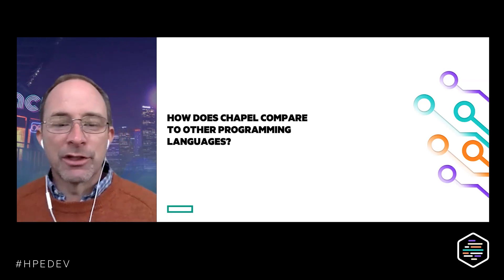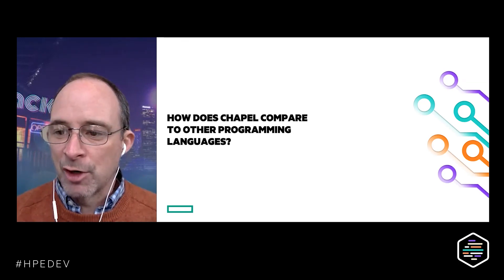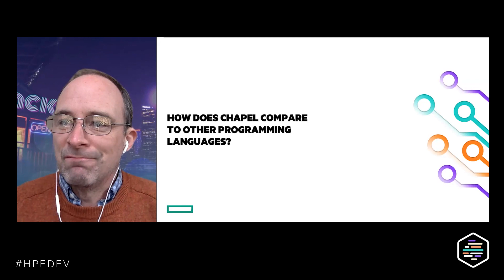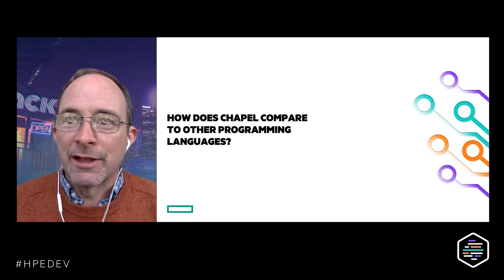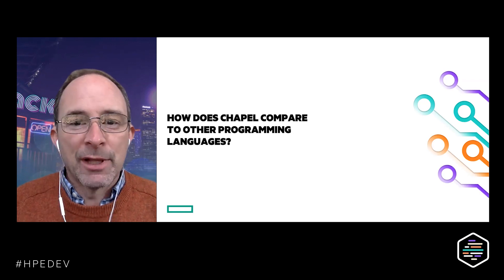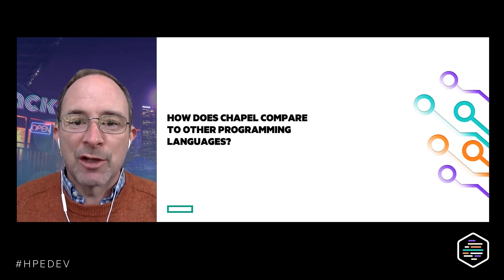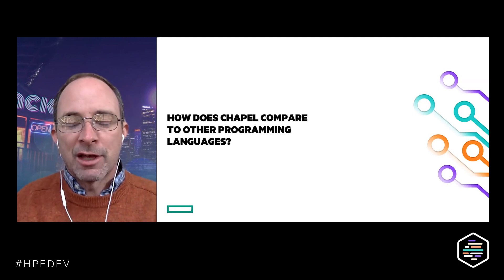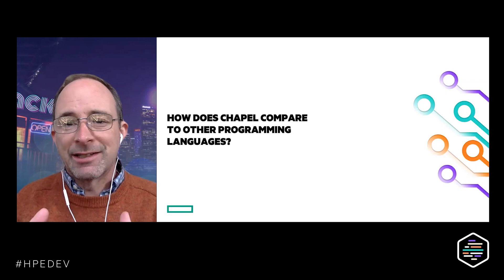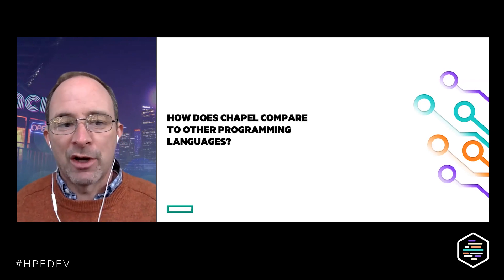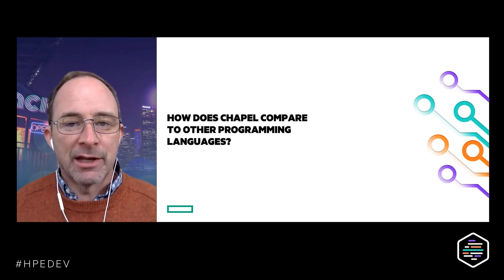Now, how does Chapel compare to other programming languages? I'll use the Computer Language Benchmarks Game website. Despite having 'game' in the title — indicating it's not the perfect measurement — it takes 10 little benchmarks exercising key language patterns, supports about 25 languages, lets you submit entries, and allows you to compare which run fastest, which have the smallest code size, and browse the actual code to see if it's something you'd enjoy writing.